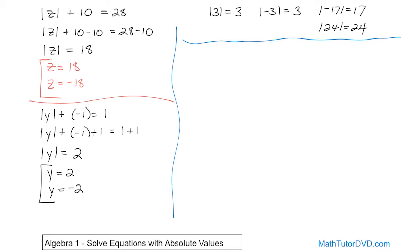We'll do one last problem to illustrate. Negative absolute value of x plus 2 is equal to negative 6. We want to get the absolute value of x by himself. We have the negative 1 out here, so we need to distribute it in. The negative times the absolute value of x is negative absolute value of x, and then negative times 2 is negative 2. So we write it as negative absolute value of x minus 2 is equal to negative 6.